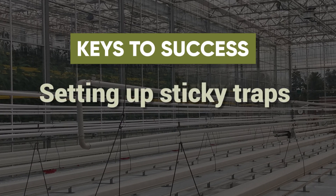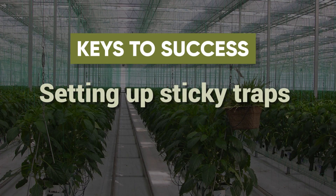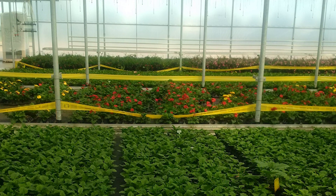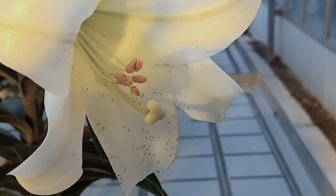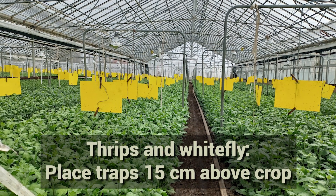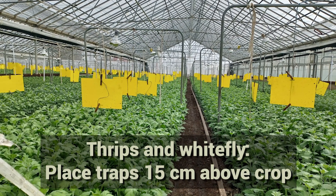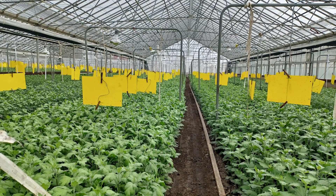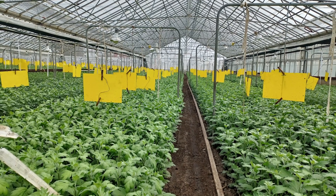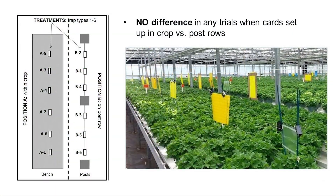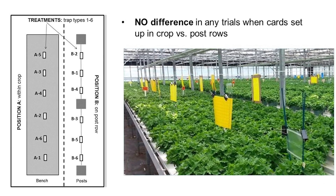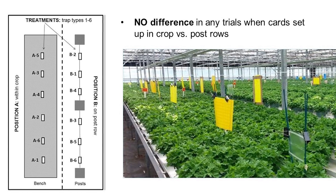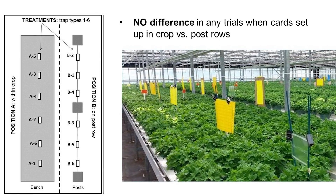Now that we've debunked some of the myths about sticky traps, we will outline how best to use them. Sticky cards and tape are designed to catch flying pests and should be placed near the pest populations you're trying to catch. For thrips and whiteflies, place them no more than 6 inches or about 15 cm above the crop. Install string, wire, or brackets as an easy way to raise the sticky traps as the crop gets taller. On-farm tests by OMAFRA also showed that large sticky traps hung between posts were just as effective as those placed in the crop, and both methods caught a similar number of pests.